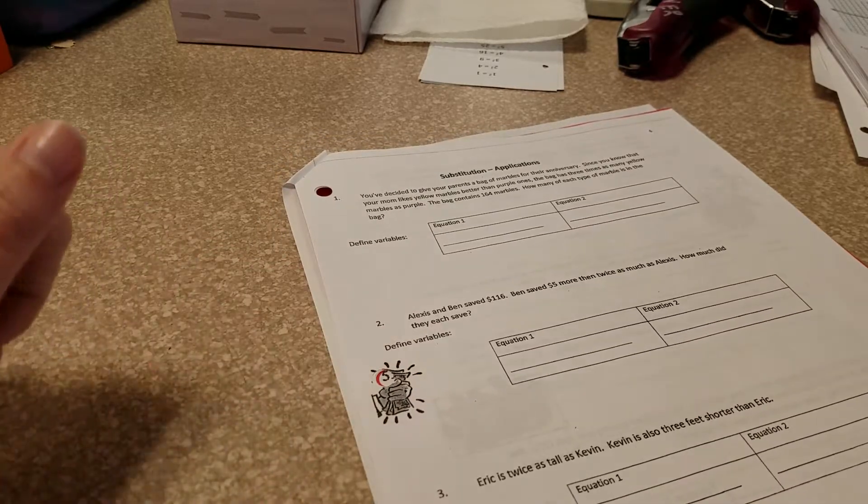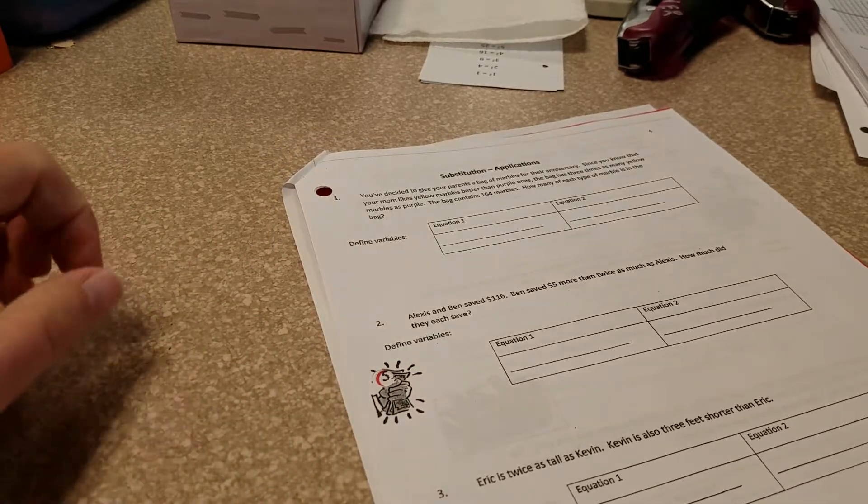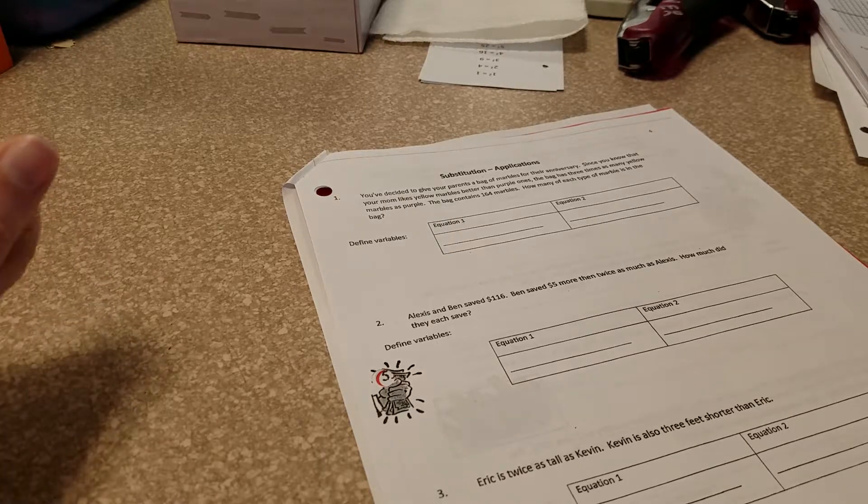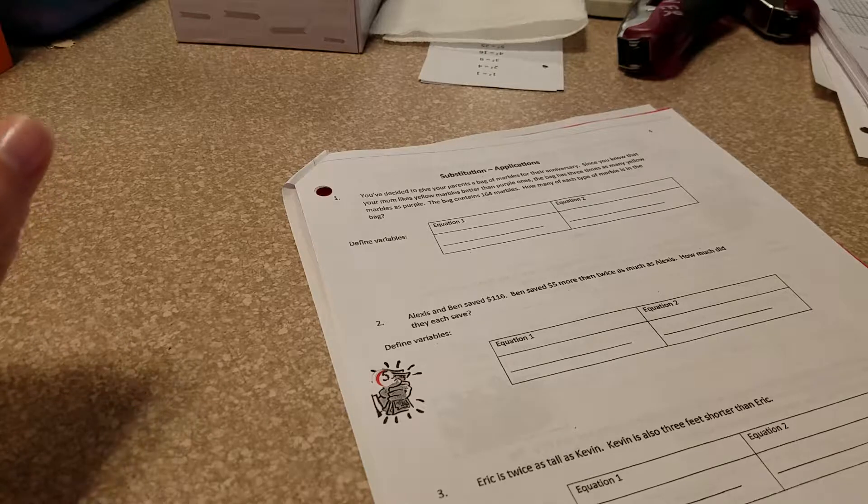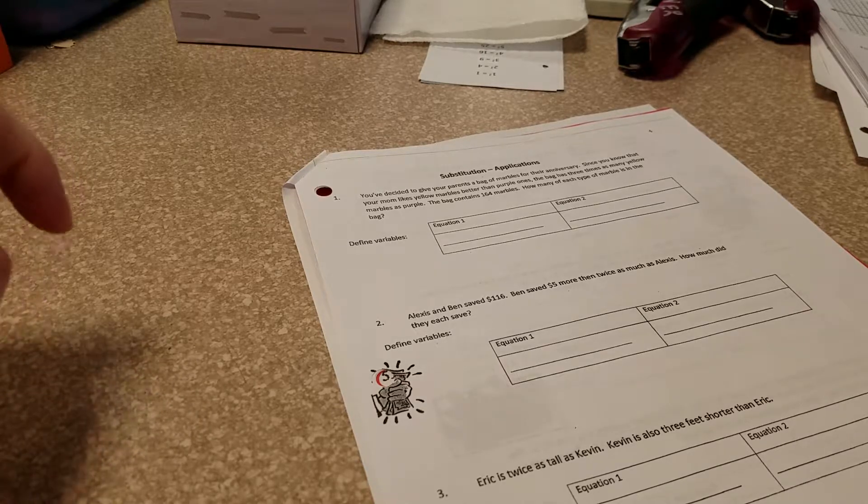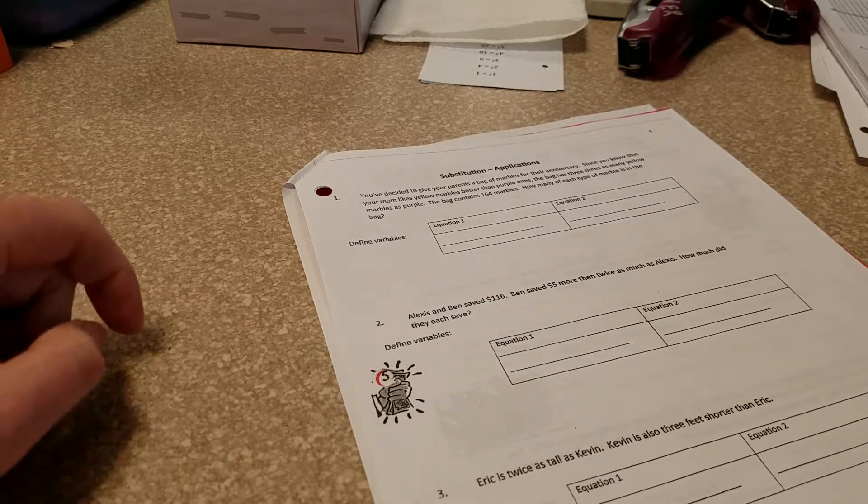You've decided to give your parents a bag of marbles for their anniversary. Since you know that your mom likes yellow marbles better than purple ones, one bag has three times as many yellow marbles as purple. The bag contains 164 marbles. How many of each type of marble is in the bag?